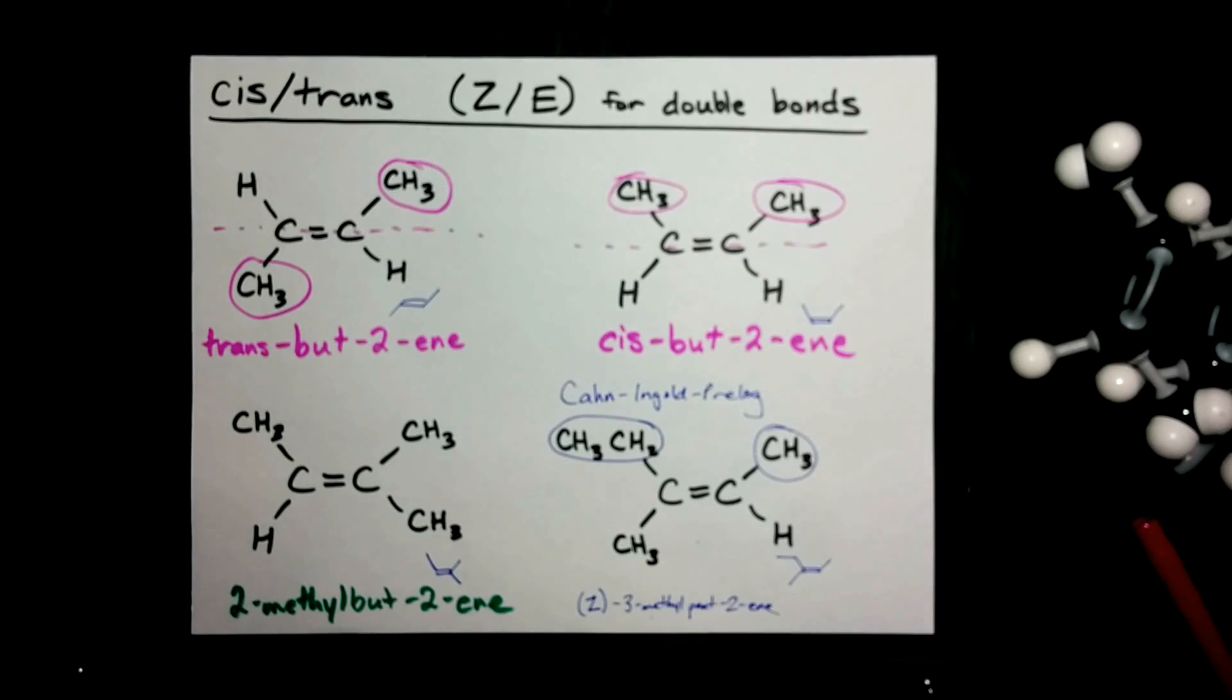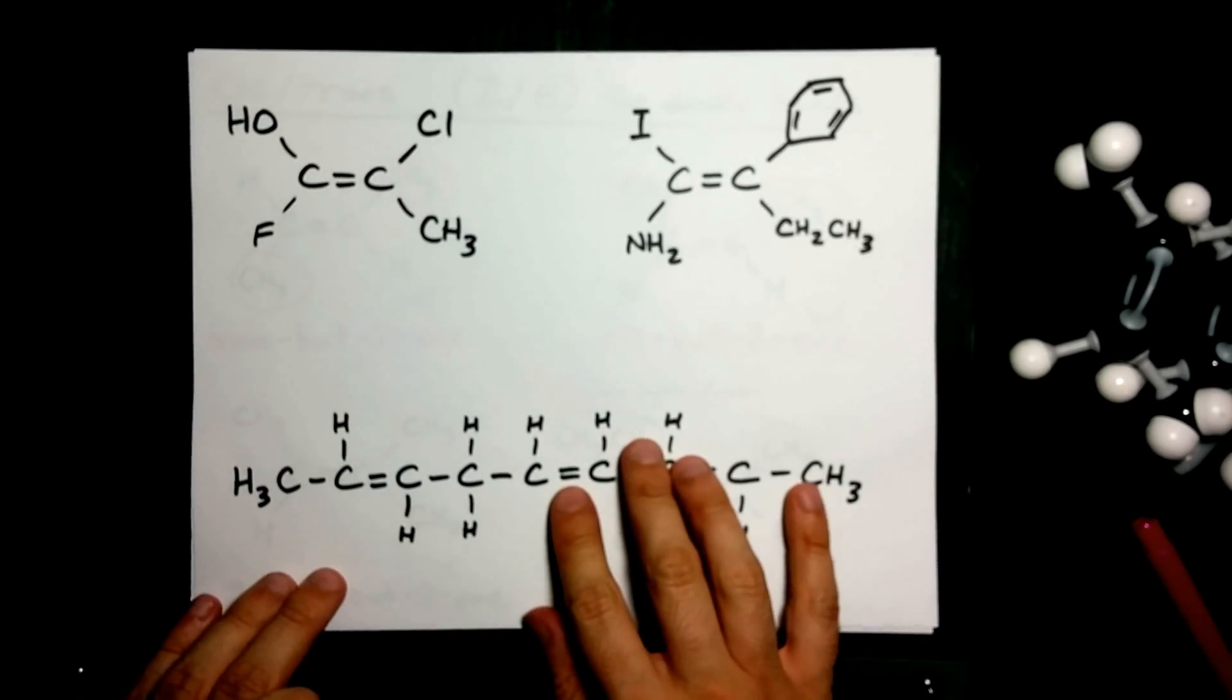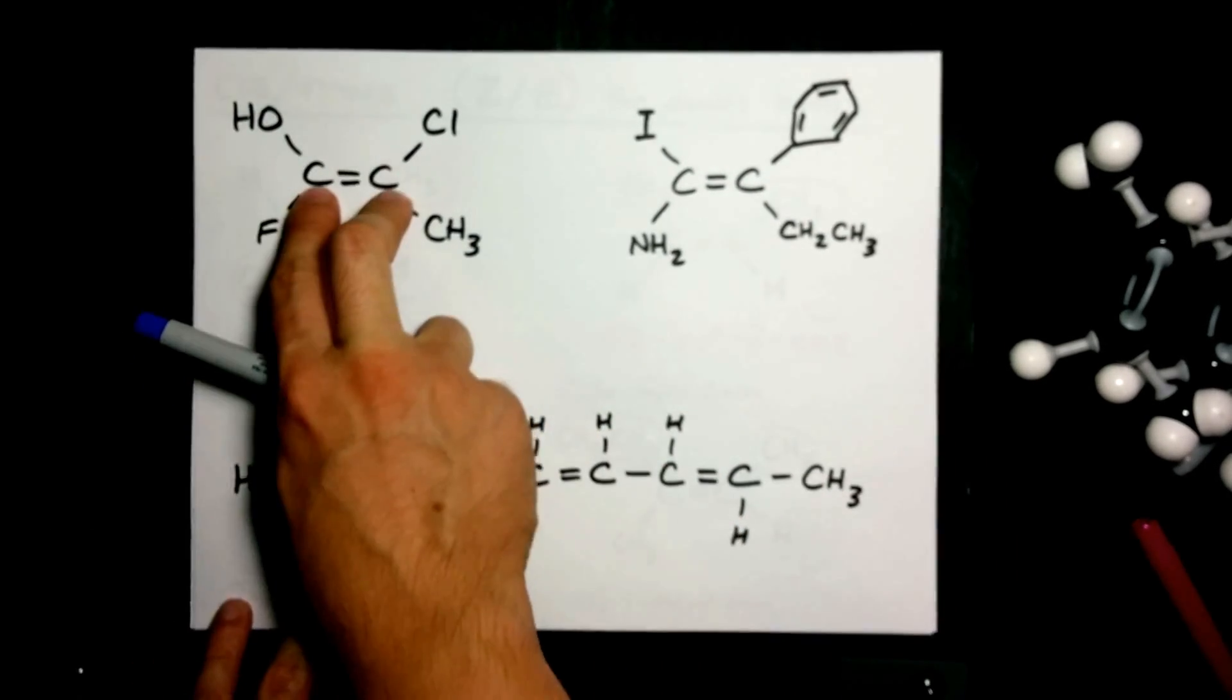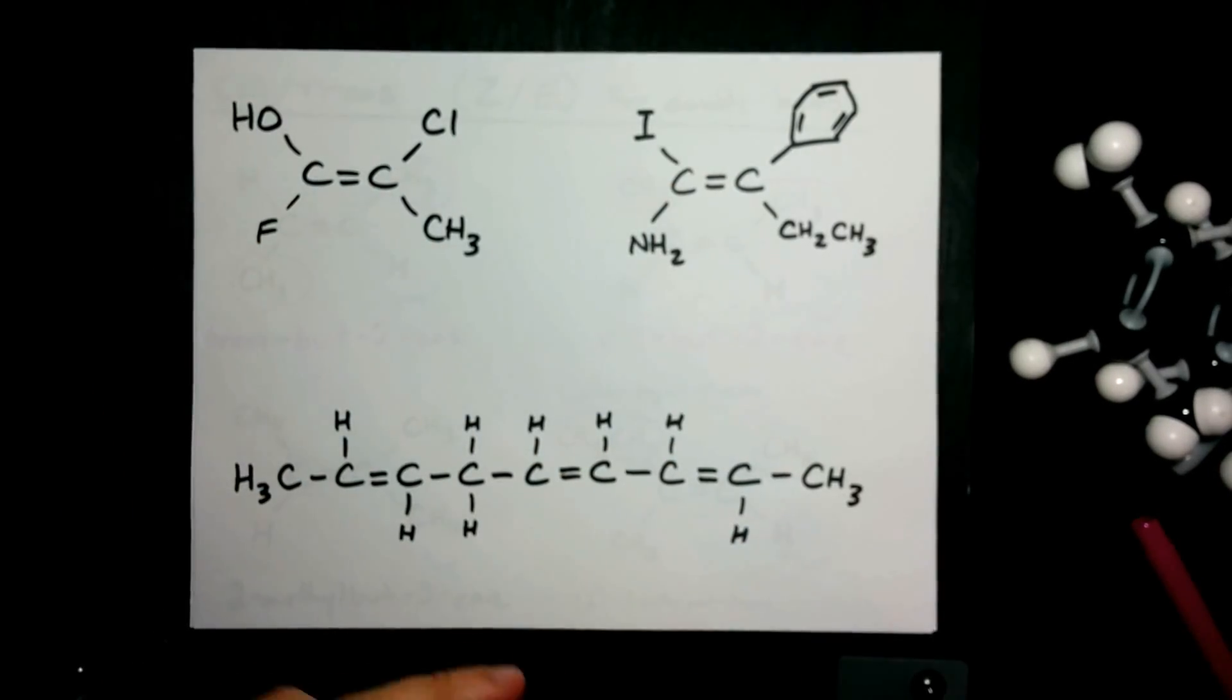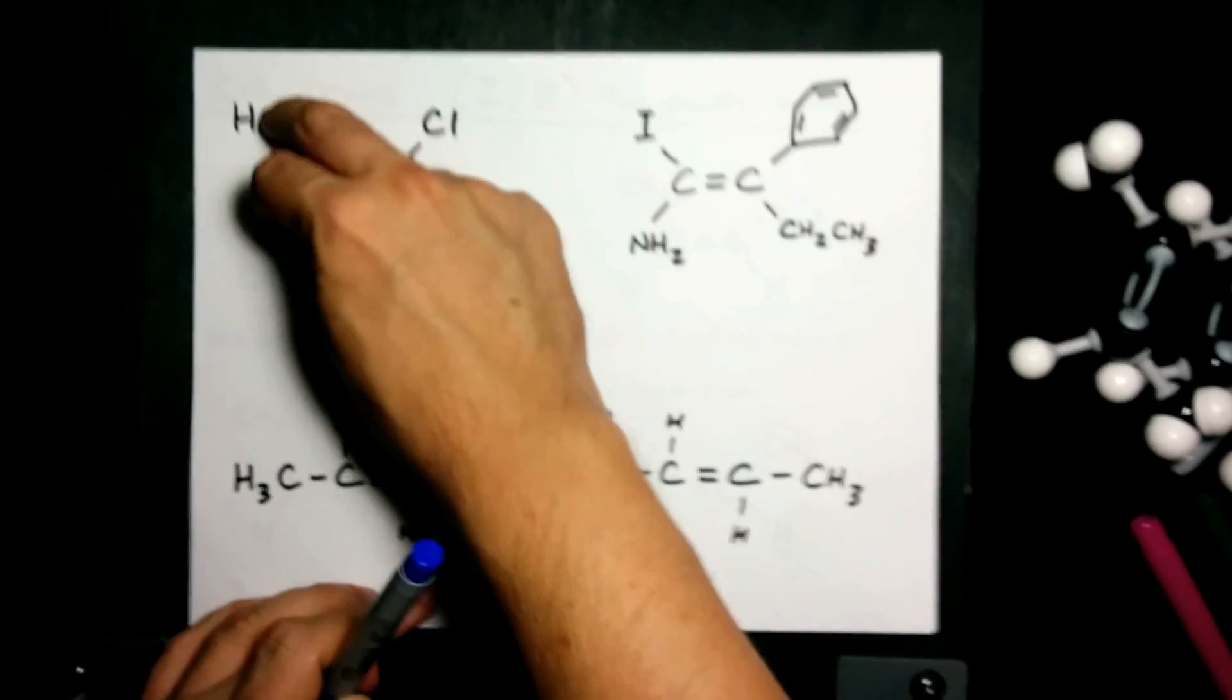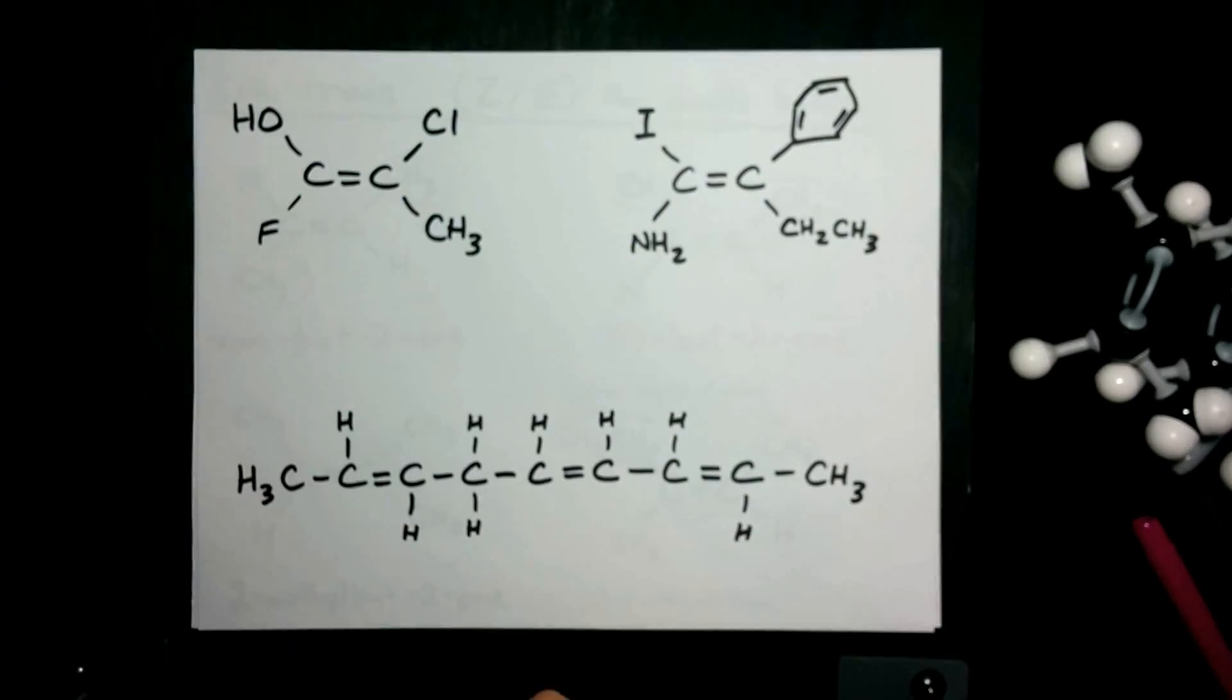Now I created some more examples for you because I know you guys are hungry. Two carbons with a double bond between them. Check for cis-trans isomerism. These are different and these are different. Therefore, we do have it.